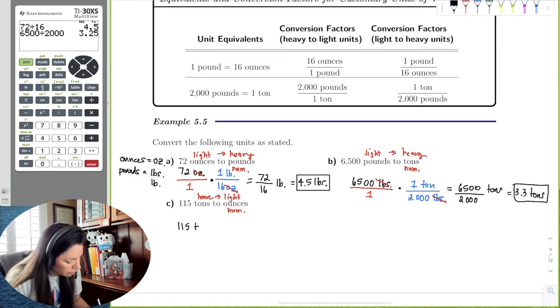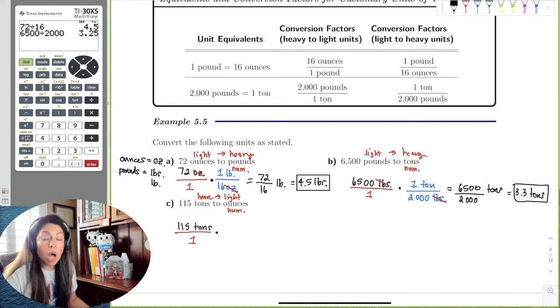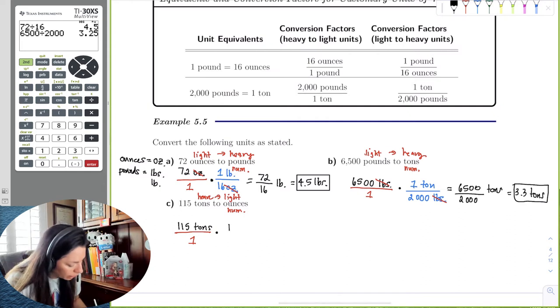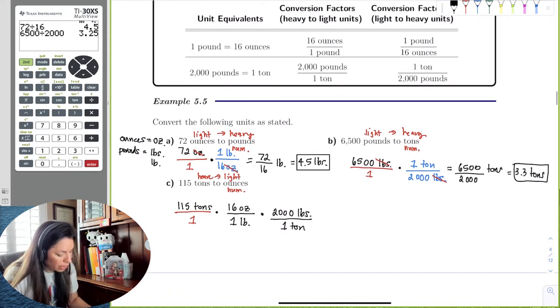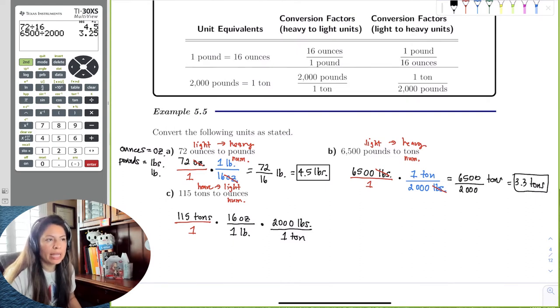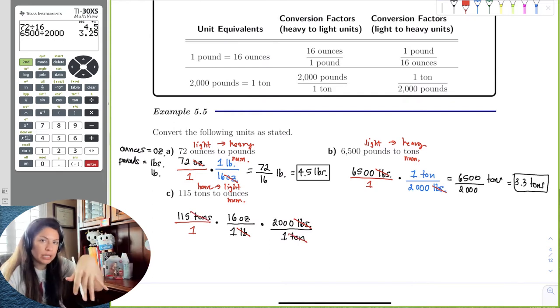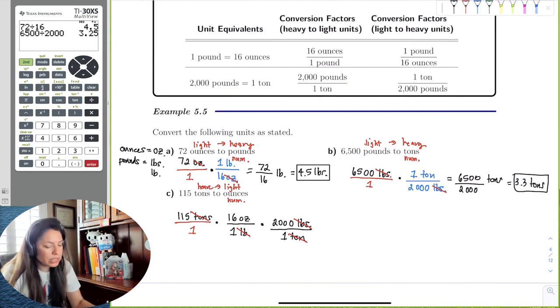So first, let's write 115 tons. Let's put it over one to be consistent. And let's multiply. Because I don't have only one unit conversion factor for this example, I have to use two. I have to use the one that says 16 ounces per one pound times 2,000 pounds per one ton. Now, I just want you to note that there is no abbreviation for ton. It's just T-O-N. We can see what units we reduce out. We can see that we reduce out pounds and we reduce out tons.